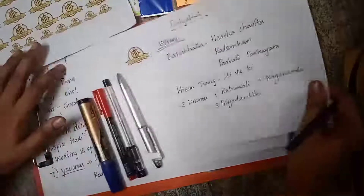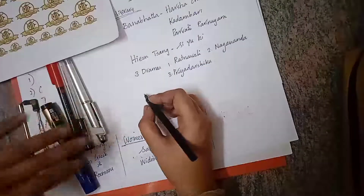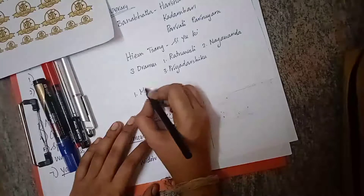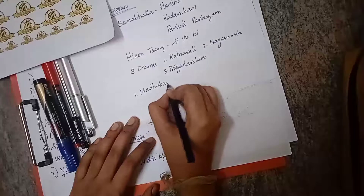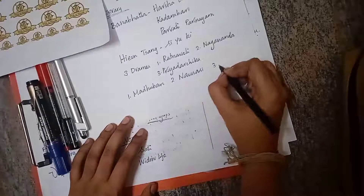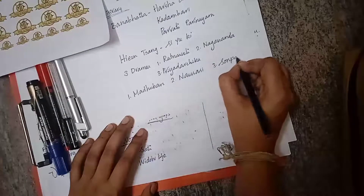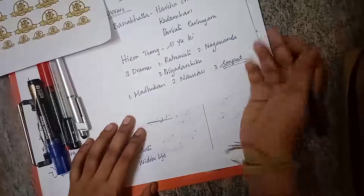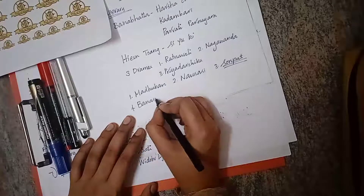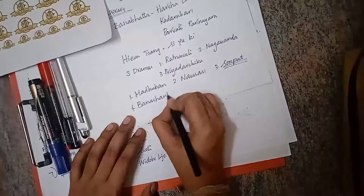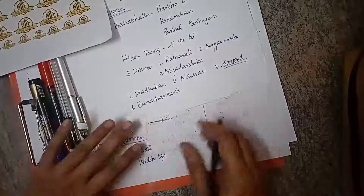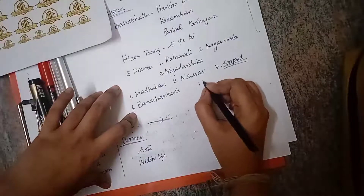There are also archaeological evidences relating to the Pushyabuti dynasty in the form of inscriptions. These include the Madhuban plate inscription, the Nausasi copper plate inscription, the Sonpet inscription (which tells about the chronology of Harsha), and the Bhanasankara inscription (which contains Harsha's signature).